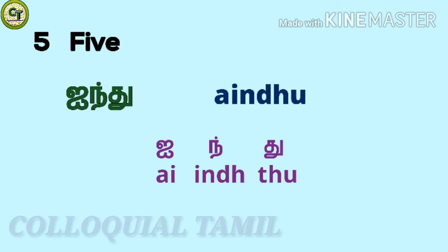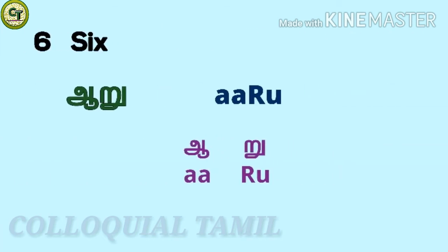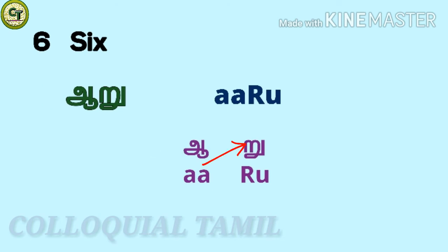For five: 'aindu'. A with a consonant, i, n, d, a short letter together: aindu. For six: 'aru'. A (a long vowel), ru (a short letter) together: aru.